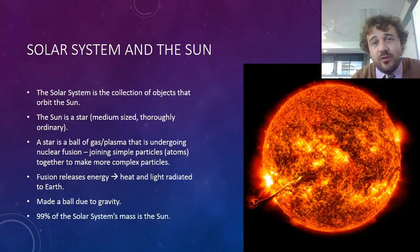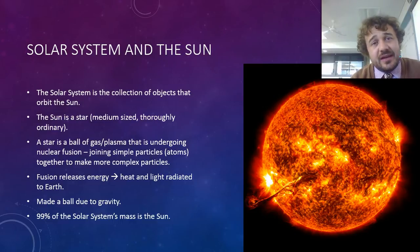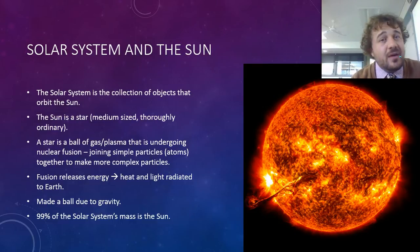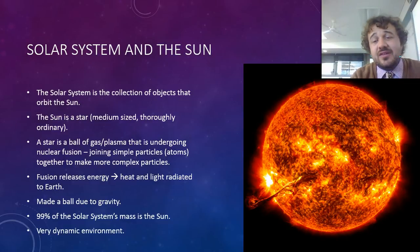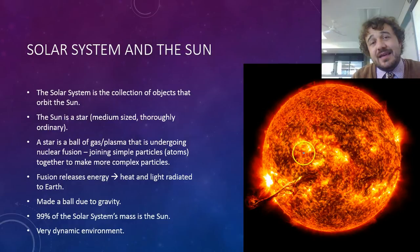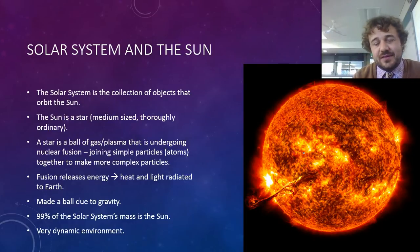That remaining 1% is all the planets, all of the asteroids, comets, you — everything else. And it's a very dynamic environment. You can see here, a lot of people imagine the Sun as this nice, happy yellow bulb, but it's very angry with lots of stuff going on.